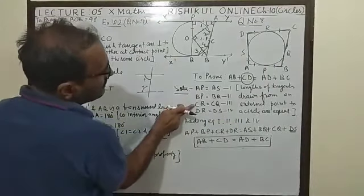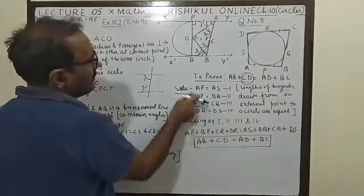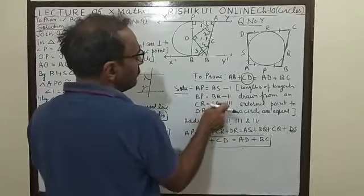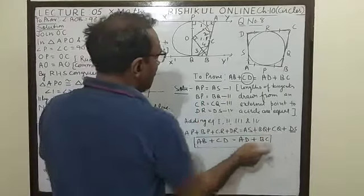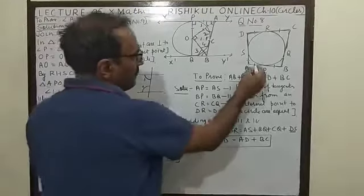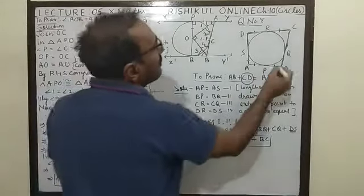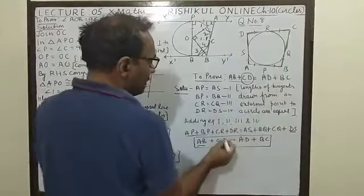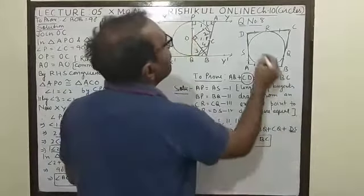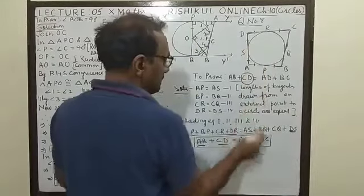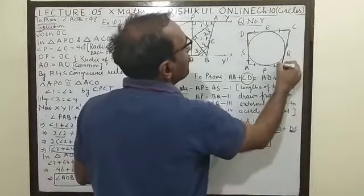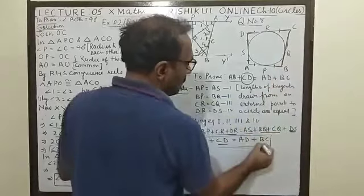AP plus BP plus CR plus DR, left hand side method of DG, equal to right hand side, AS plus BQ plus CQ plus DS. And then, AP plus PB, you see very identically, AP plus PB equal to AB. And then, CR plus DR equal to CD. And AS plus DS, AS plus DS, AD. And BQ plus CQ, BQ plus CQ equal to BC.